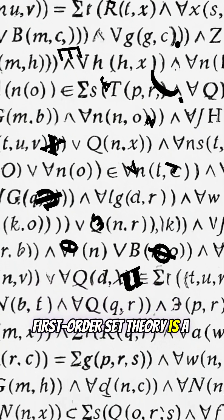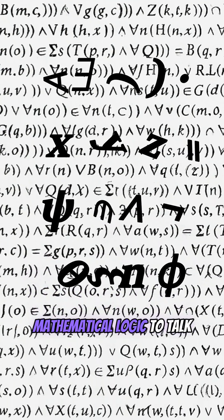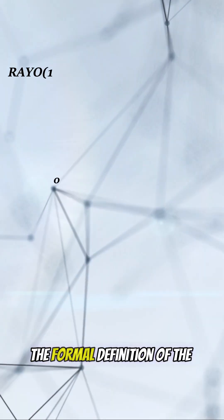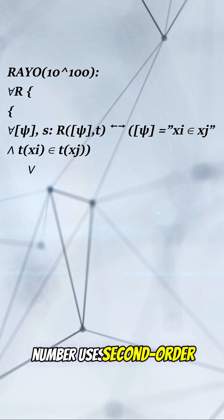First-order set theory is a formal system used in mathematical logic to talk about sets and their members. The formal definition of the number uses second-order logic formula.